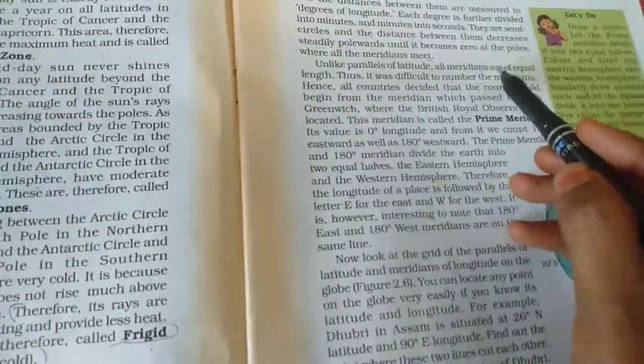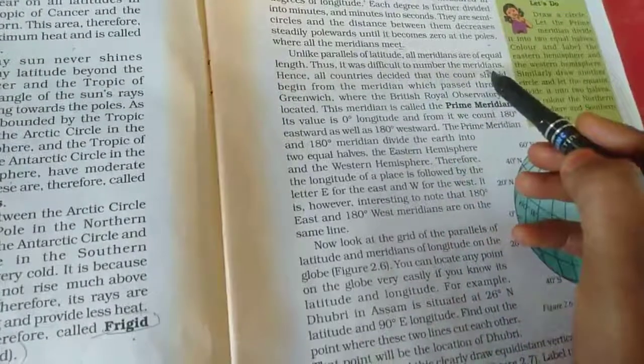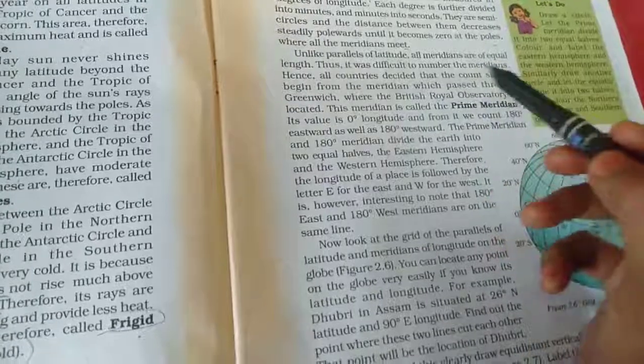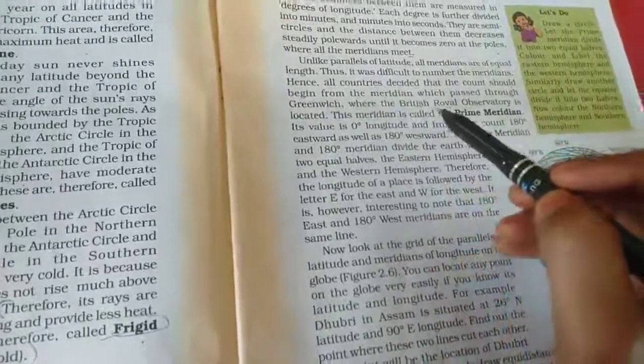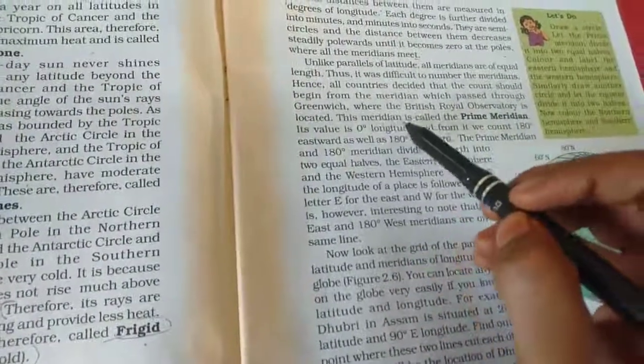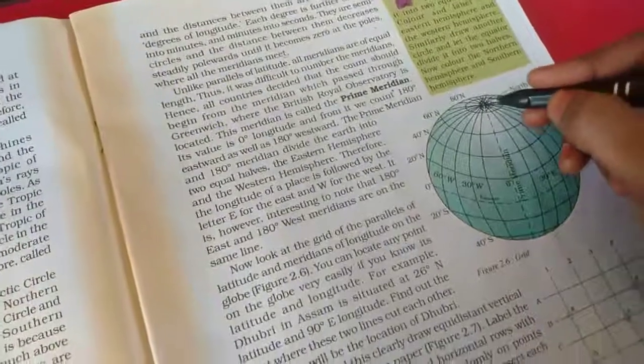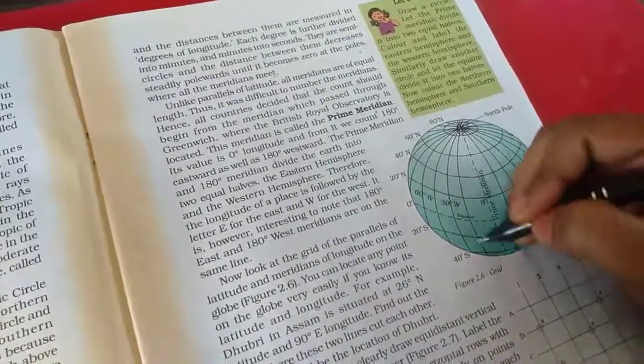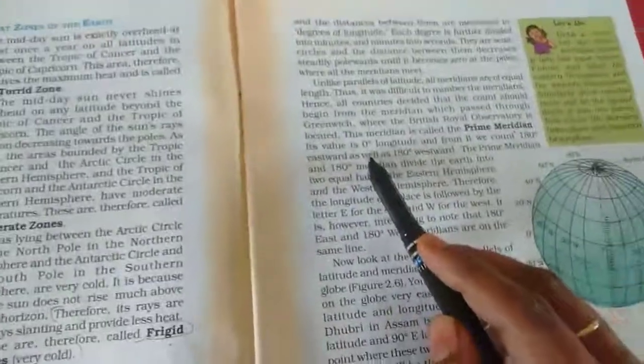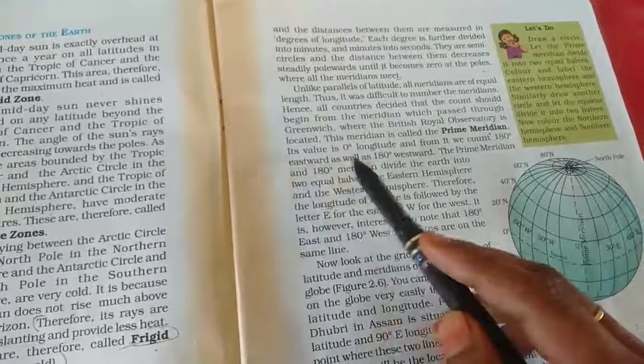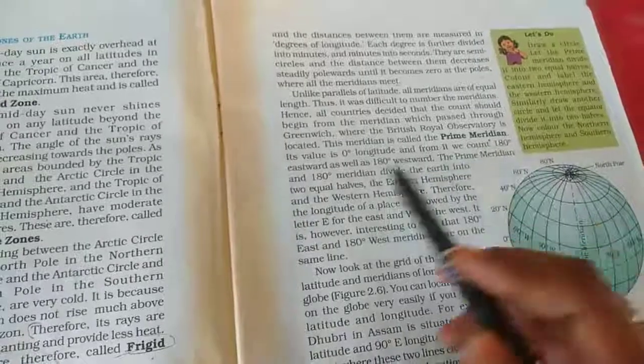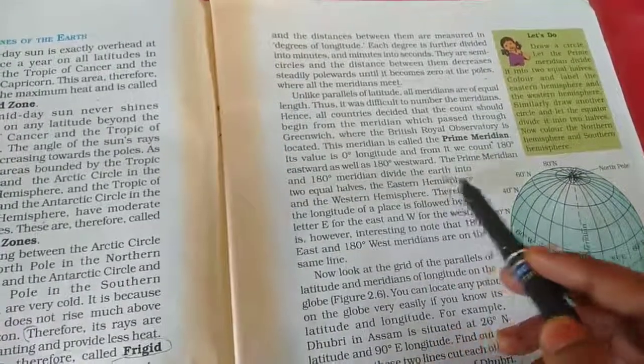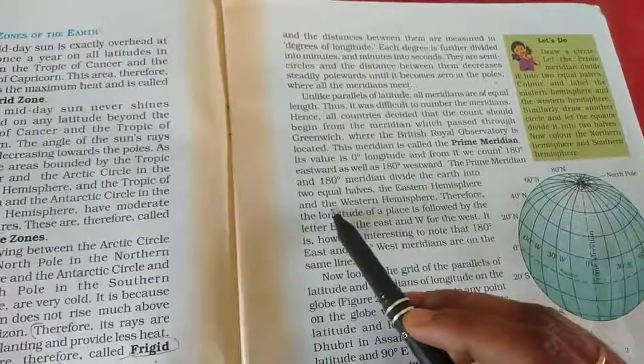Unlike parallels of latitude, all meridians are of equal length. Thus it was difficult to number the meridians. Hence all countries decided that the count should begin from the meridian which passed through Greenwich, where the British Royal Observatory is located. This meridian is called the prime meridian. So the center part, this is called the prime meridian because this separates all those rays of North Pole and South Pole. Then only we can see lots of grids on the Earth. Its value is zero degree longitude and from it we count 180 degrees eastward as well as 180 degrees westward. The prime meridian and 180 degree meridian divide the Earth into two equal halves, the eastern hemisphere and the western hemisphere.